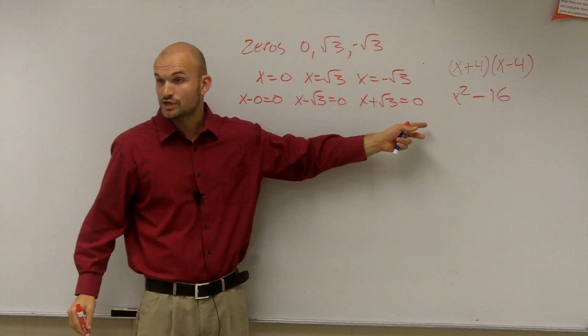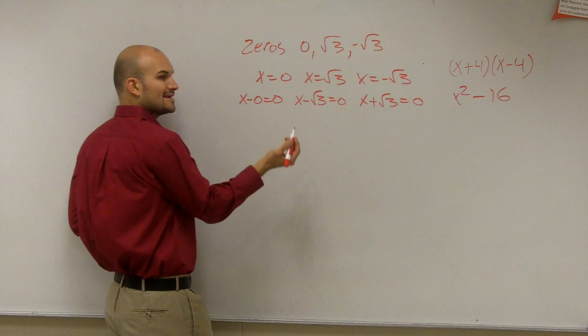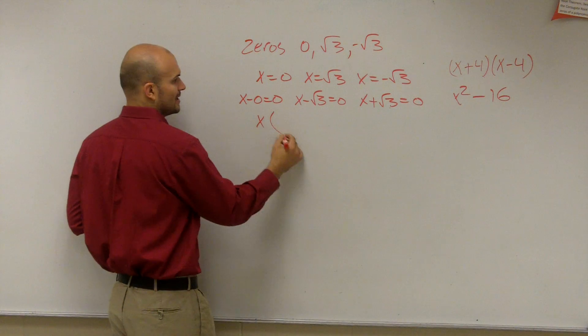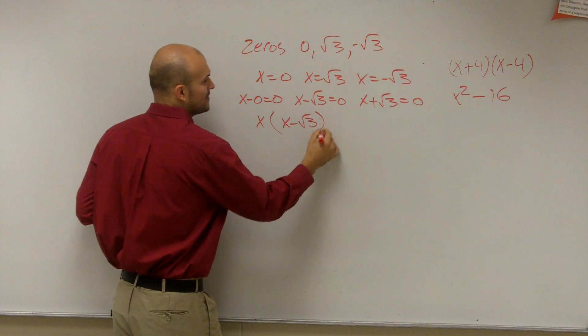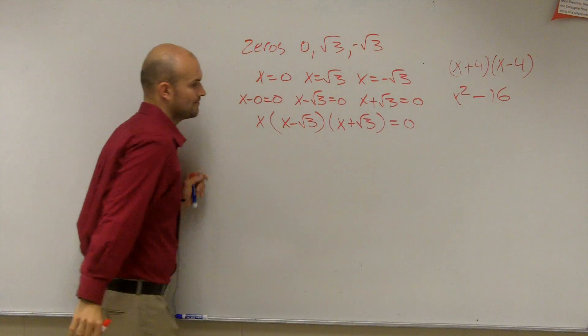Now remember, we're doing the zero product property in reverse. So I'm going to set them as all factors. x minus 0, ladies and gentlemen, is just x, right? Times x minus square root of 3 times x plus square root of 3 equals 0. All right?